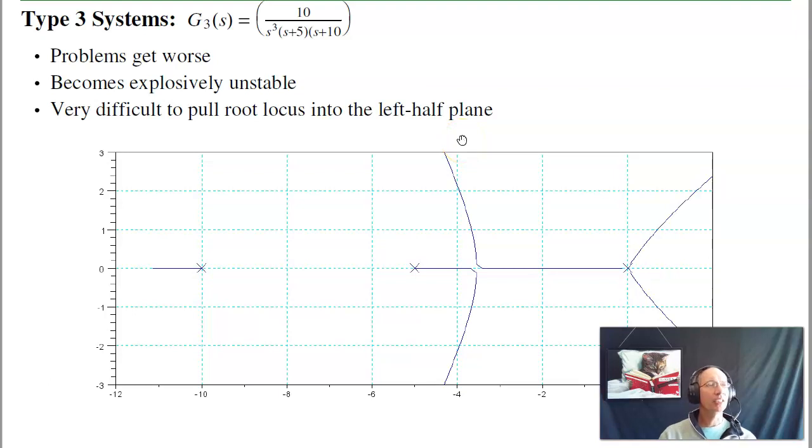If I decide, let's add three poles at s equals 0, type 3 system. Now I've got three poles right here. One pole goes left, one pole takes off at 60 degrees, one takes off at minus 60. Then the pole that goes off at 60 degrees then gets repelled by the other two poles and gets pushed right even further. So this is just a really hard system to stabilize.